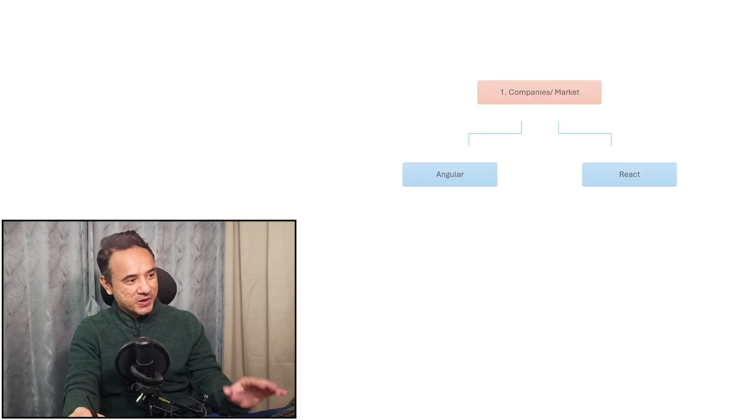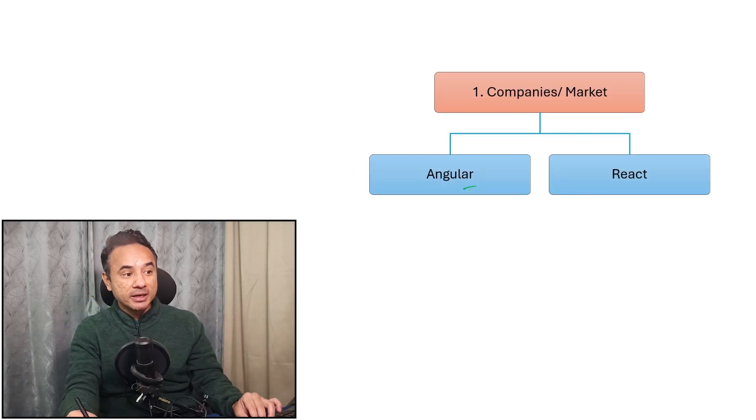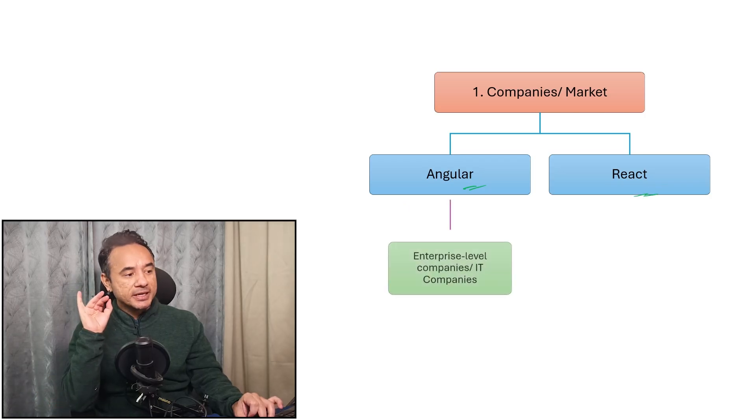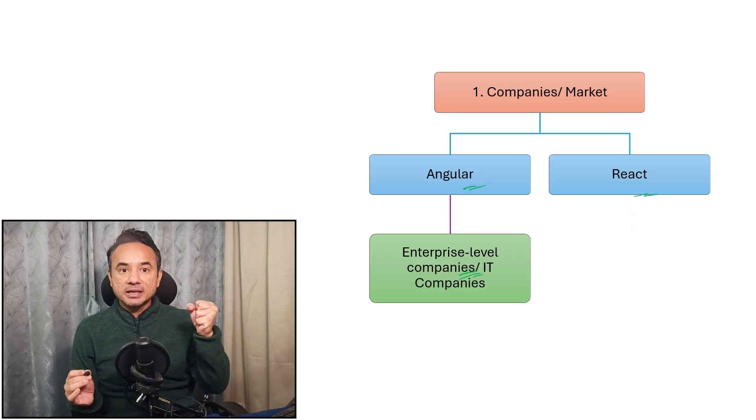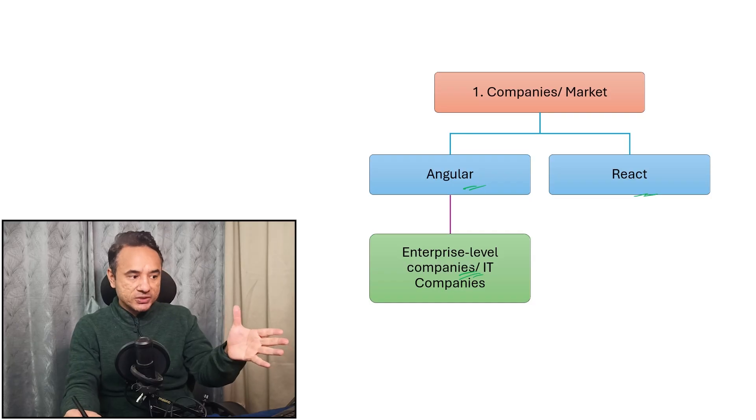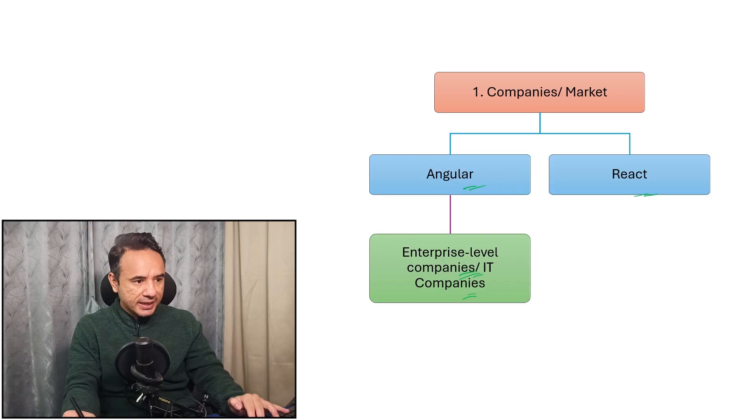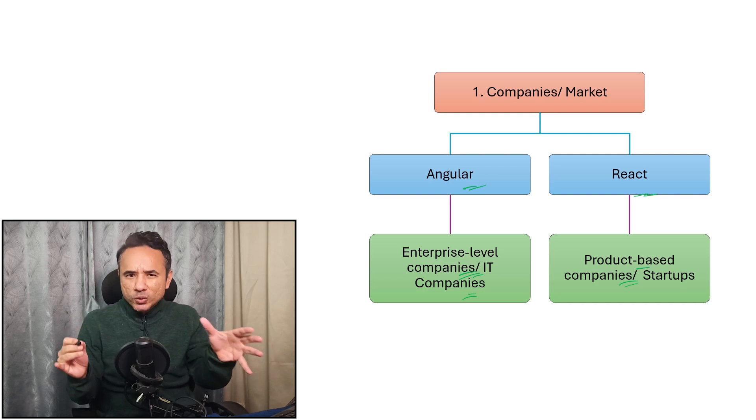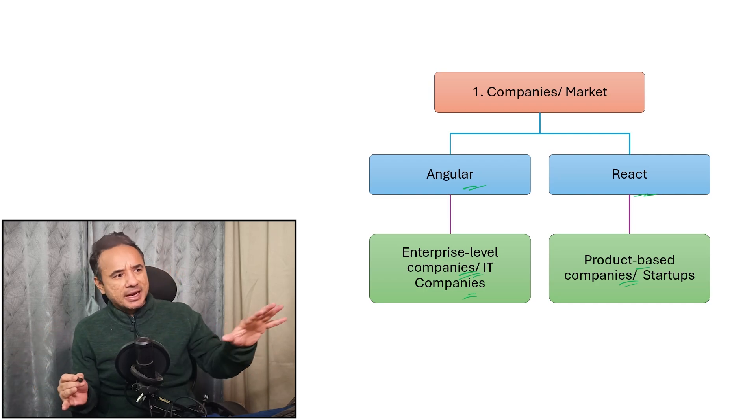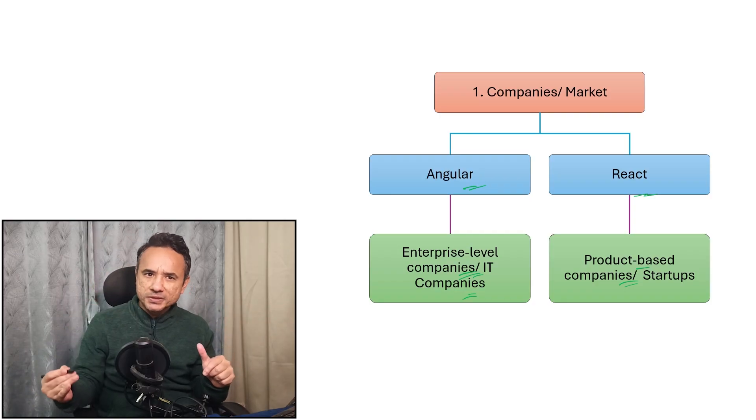At the end we will decide which one is best. First difference is what type of companies prefer Angular and what React. Simple. Angular is widely used in enterprise level companies, big corporates, government projects, banking, insurance, and large internal systems. Because these enterprise companies are the major client of IT companies, therefore IT companies also use Angular more. On the other hand, React is widely used in product-based companies, startups like SaaS companies, and consumer facing products.